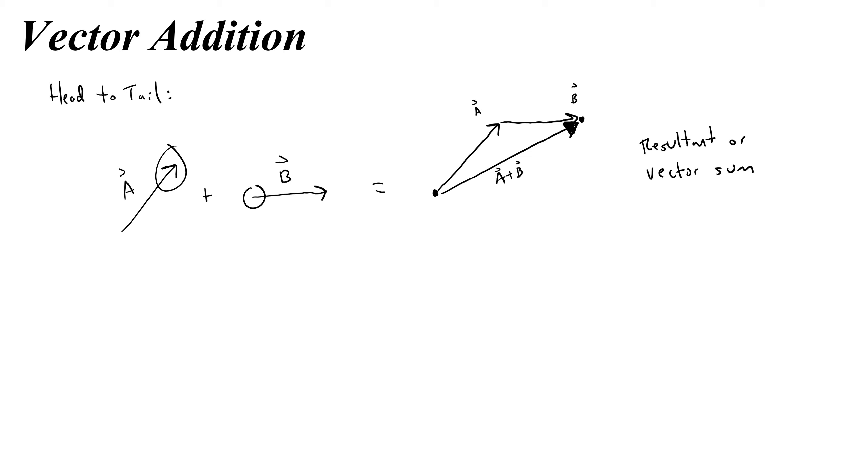Now interestingly, another way to think about this addition is by drawing a parallelogram. This is called the parallelogram method. The parallelogram method is really useful for when the vectors kind of all start at the same spot. So what you would do here, here's a, here's b, is instead of arranging them head-to-tail, you would arrange them tail-to-tail. So a, and then b, like that. Then with those two vectors, you create a parallelogram, where all of the sides are parallel. Then the diagonal of that parallelogram is your resultant sum.